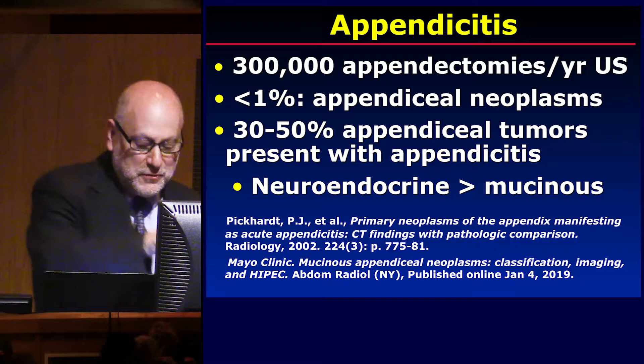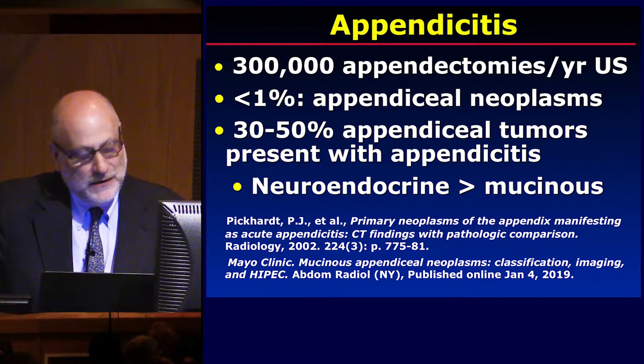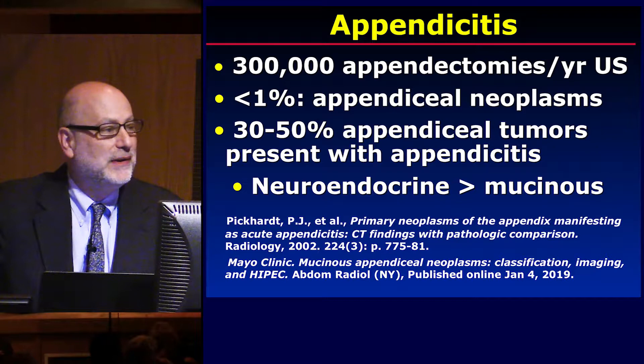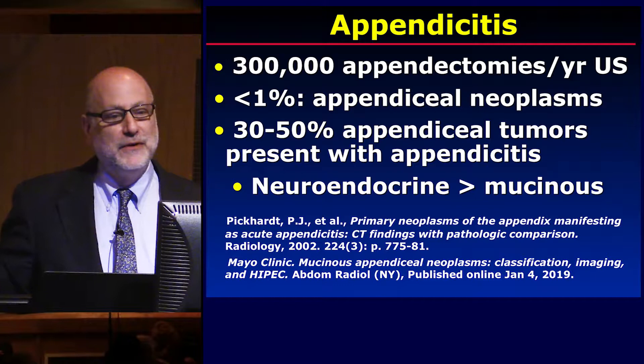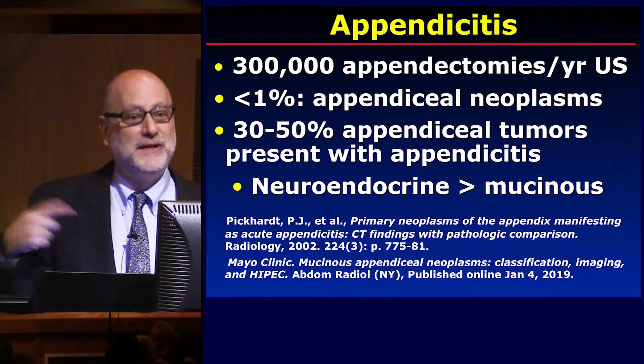There are 300,000 appendectomies in this country every year. Comfortably less than 1% will actually present with an occult mucinous neoplasm. It's part of my job as a radiologist to help educate radiologists who are reading these scans — often CTs in the emergency room — and how to differentiate between inflammatory appendicitis versus a potential mucinous neoplasm.